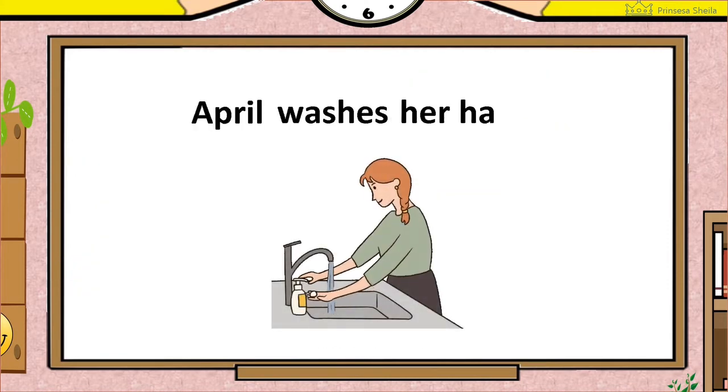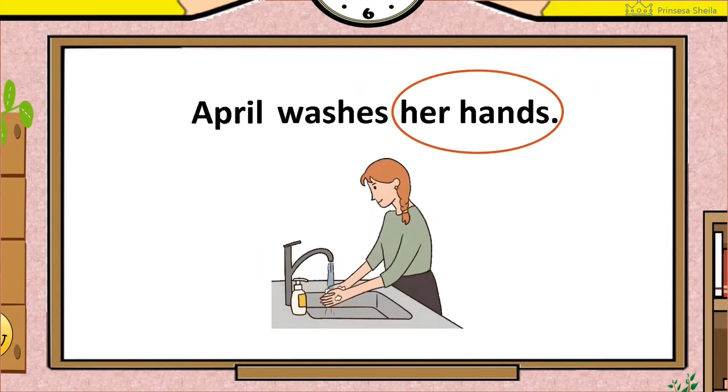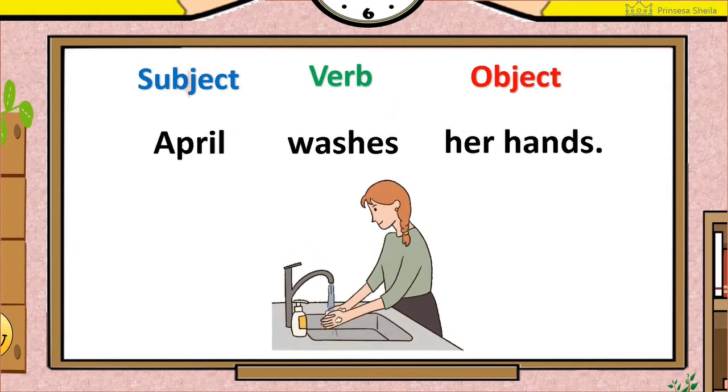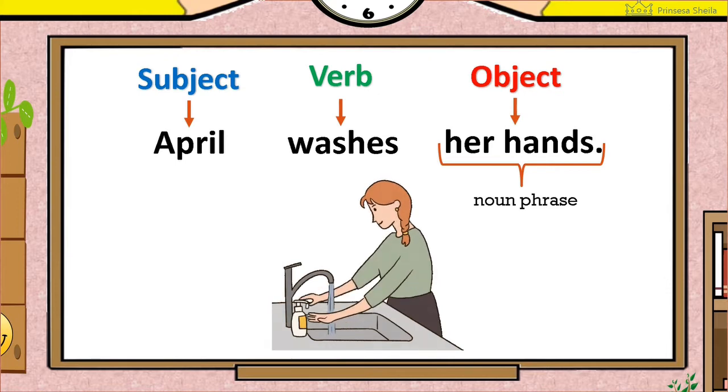Here is an example. April washes her hands. What does April wash? Her hands. So April is the doer of the action, or the subject. Washes is the action, so this is the verb. And this noun phrase is the object because it is being acted upon. It is being washed, and it adds more details to the sentence.